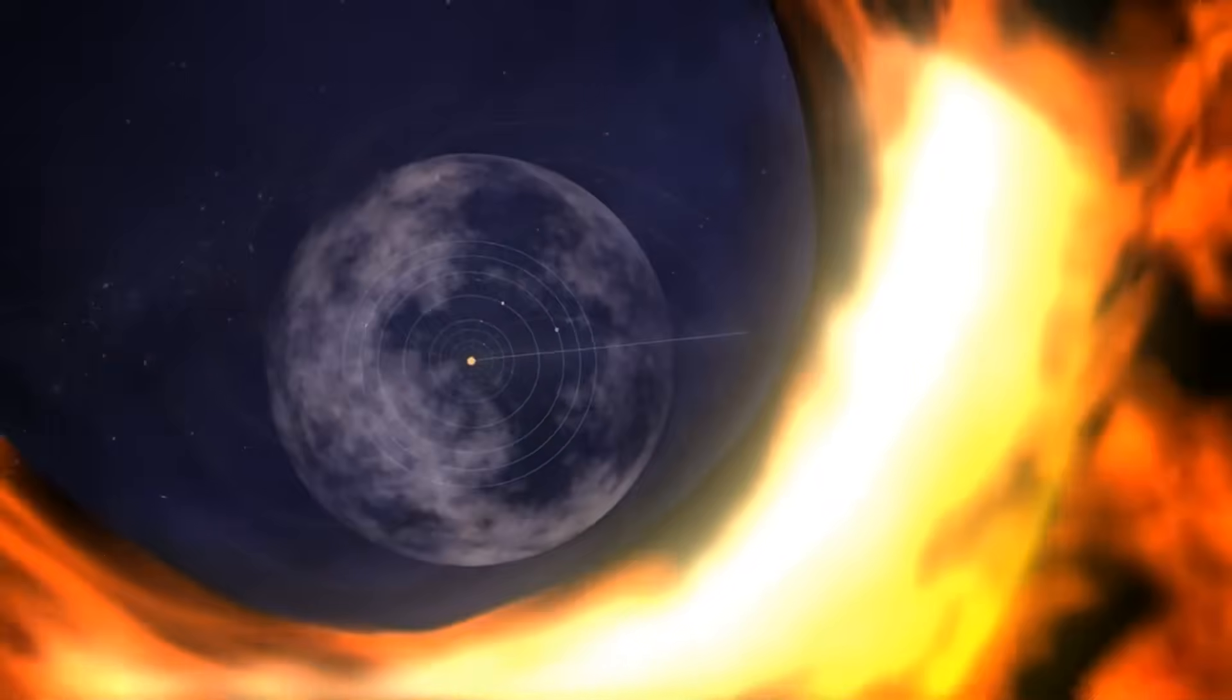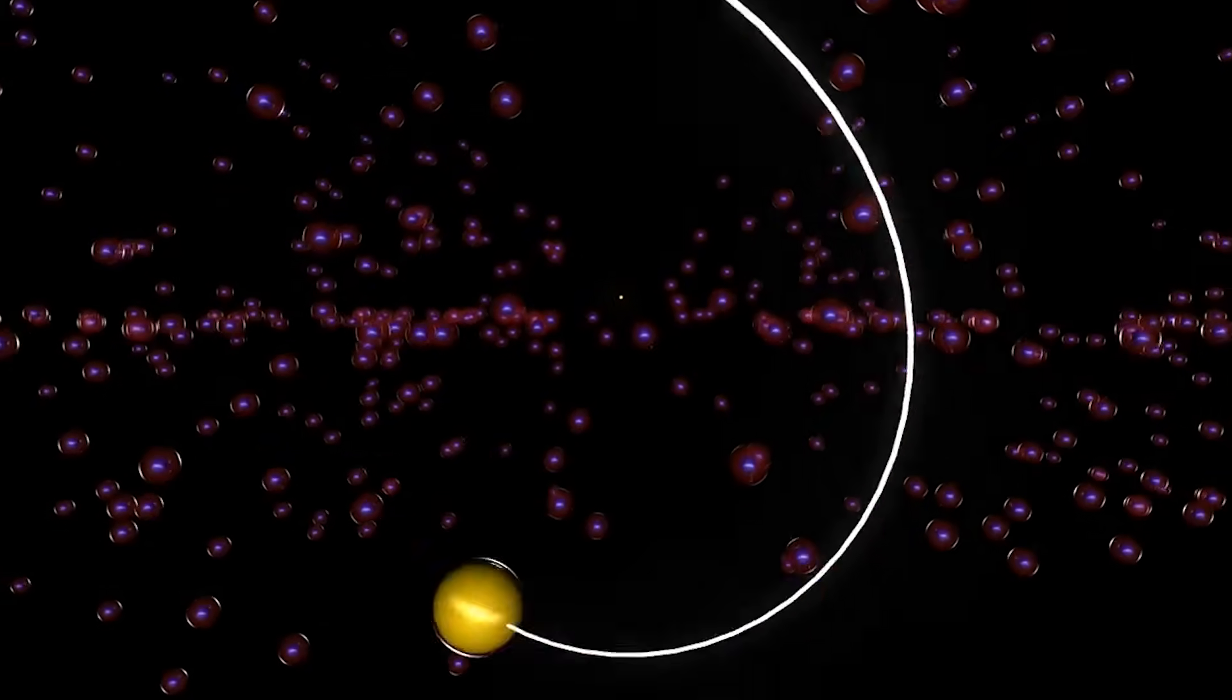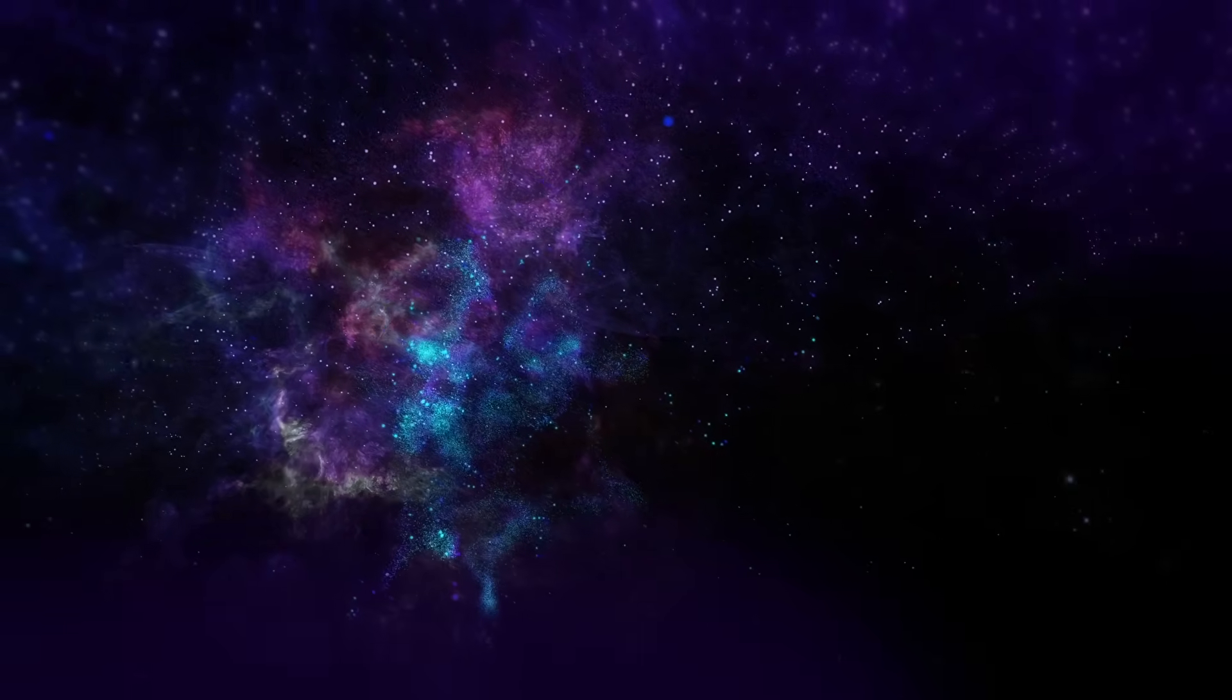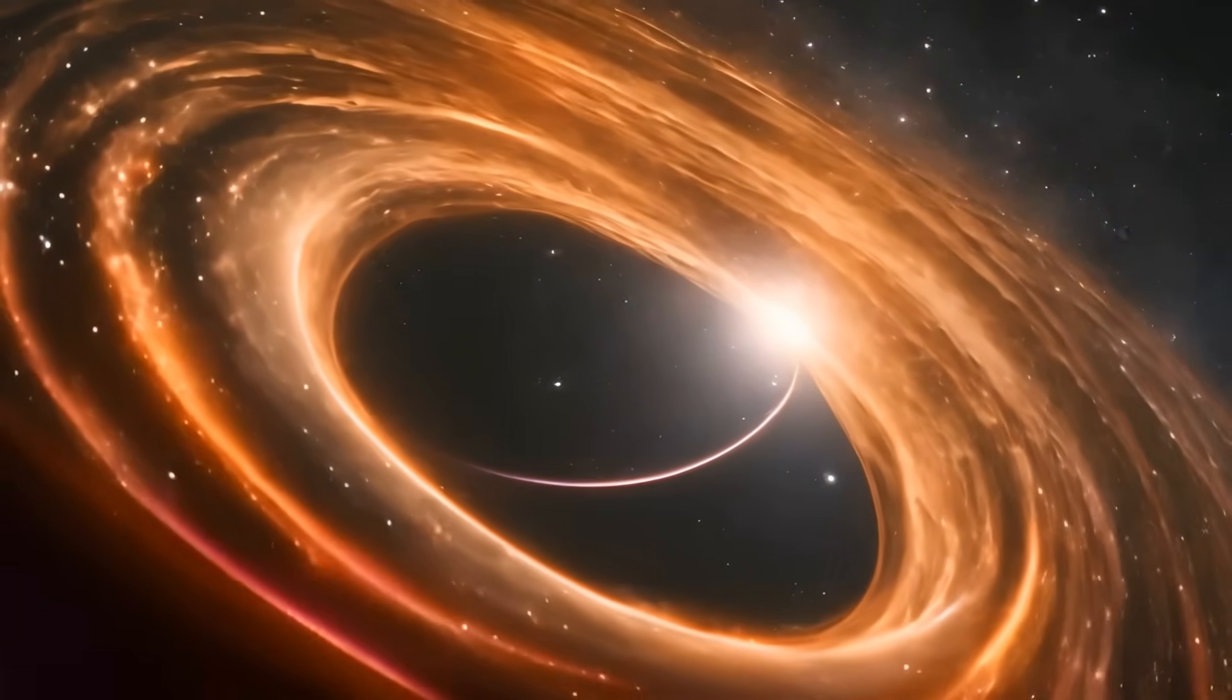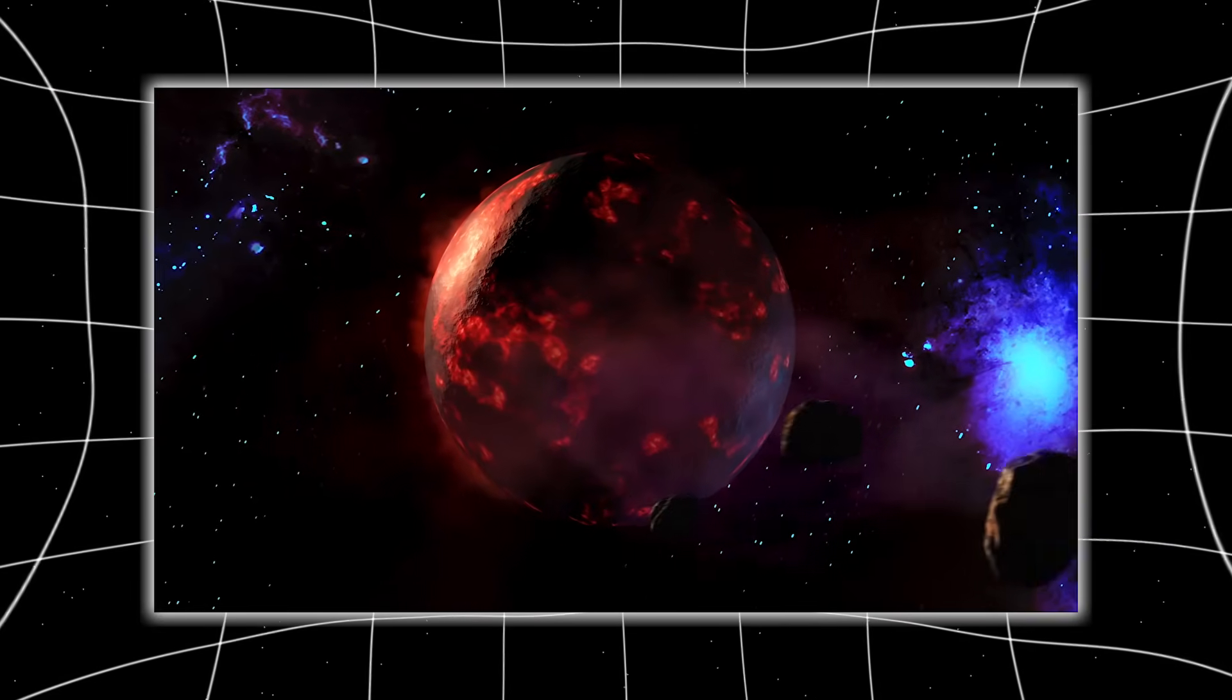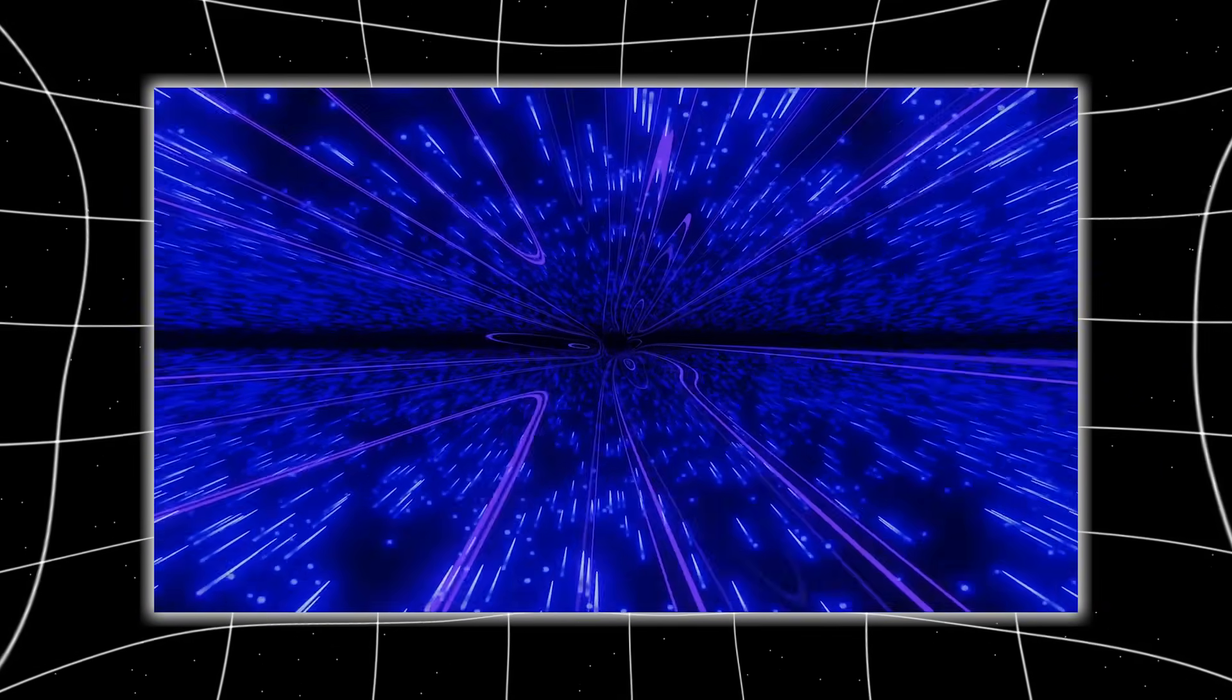Voyager 1 crossed the heliopause back in 2012, the invisible membrane where the sun's charged particles lose their influence and interstellar plasma takes over. But here's the twist. Crossing that boundary didn't reveal a quiet, peaceful emptiness. Instead, Voyager entered a turbulent region filled with unexpected density fluctuations, strange magnetic field behavior and plasma interactions that puzzled scientists and forced them to rewrite early models of interstellar space.